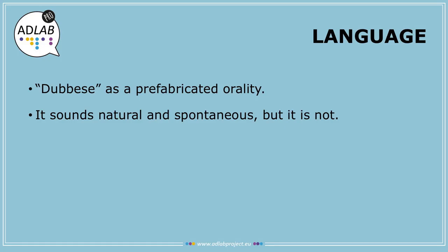Language is very important in dubbing. Although the language of dubbing, or the diegesis, is planned — the actors will be reading what is written — it must sound spontaneous, credible, natural. The audience needs to believe these American actors are speaking, say, Catalan. To that end, professionals use what's called prefabricated orality.